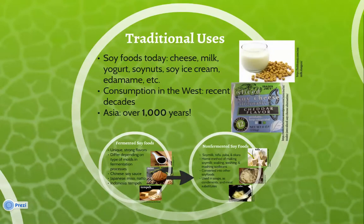Today, soy foods can be found all over supermarkets in numerous forms such as cheese, milk, yogurt, soy nuts, soy ice cream, and edamame. In Western culture, the soybean crop did not gain significance until recent decades. In contrast, soy has been consumed in Asian countries for over a thousand years.